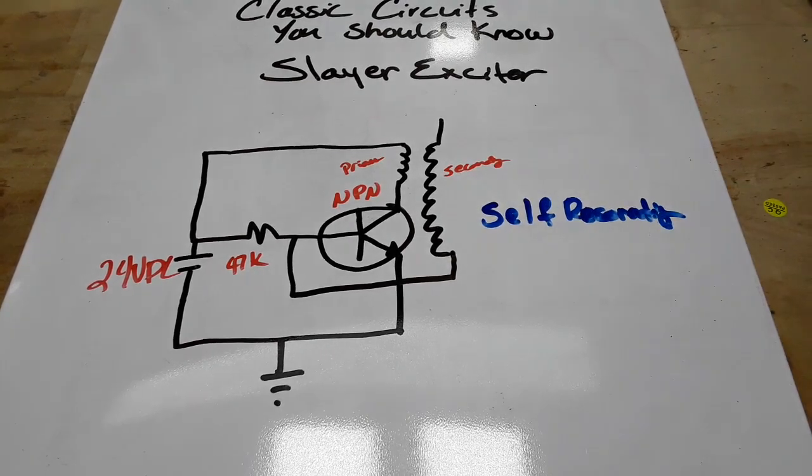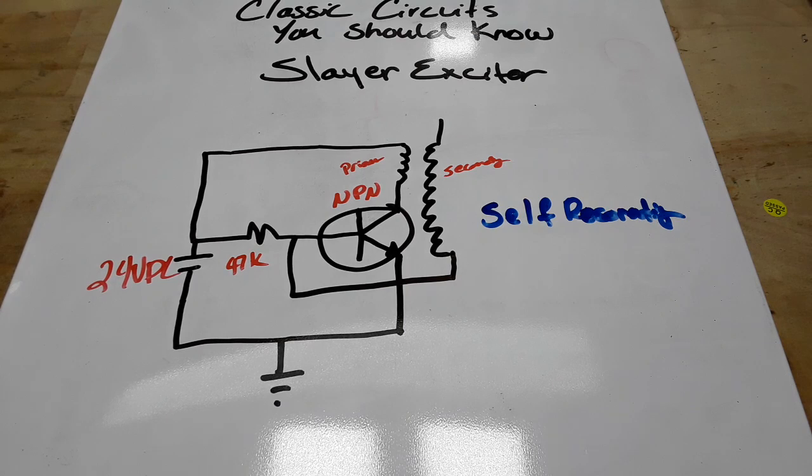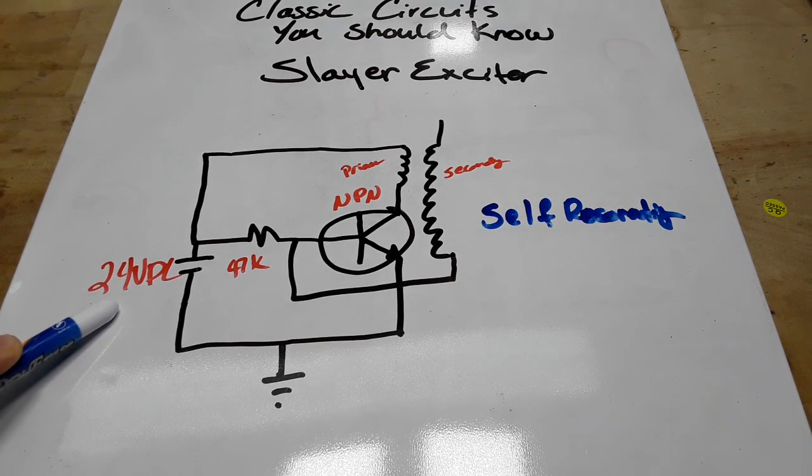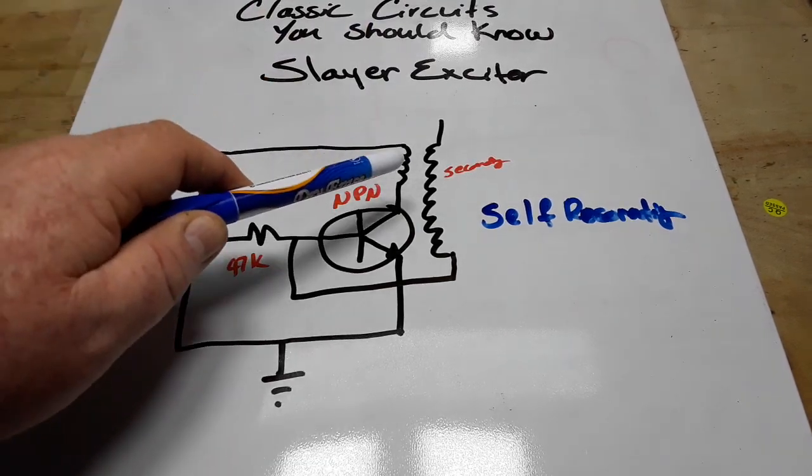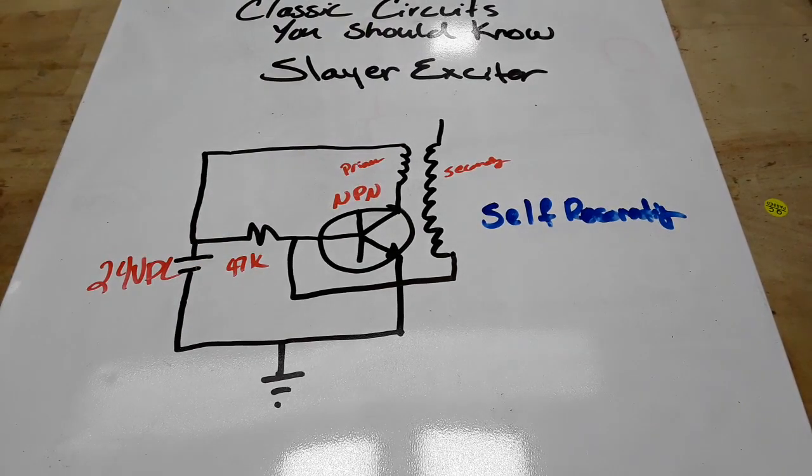And there's my phone, sorry about the phone call, but that's the way it goes. So anyway, that is your basic Slayer Exciter circuit. This is capable of producing very high voltage.